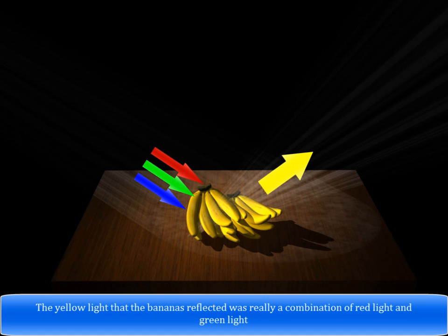The yellow light that the bananas reflected was really a combination of red light and green light.